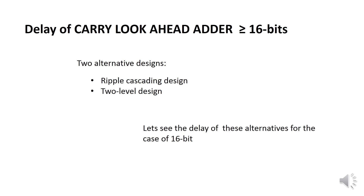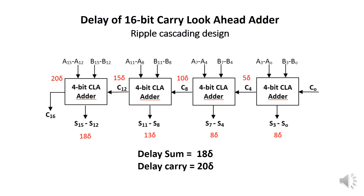Now let's see how to calculate the delay of a Carry Lookahead Adder bigger than 4 bits — meaning 16 bits or more. As we have seen in a previous video, to design a Carry Lookahead Adder bigger than 4 bits, we have two alternatives: ripple cascading design and 2-level design. Let's see the delay of each alternative for the case of 16 bits, so we can decide which is the fastest.